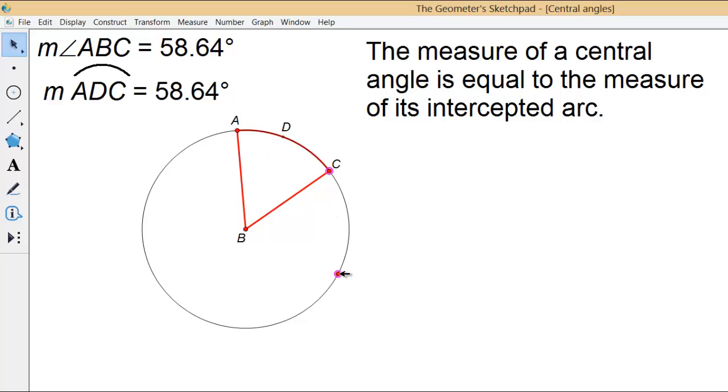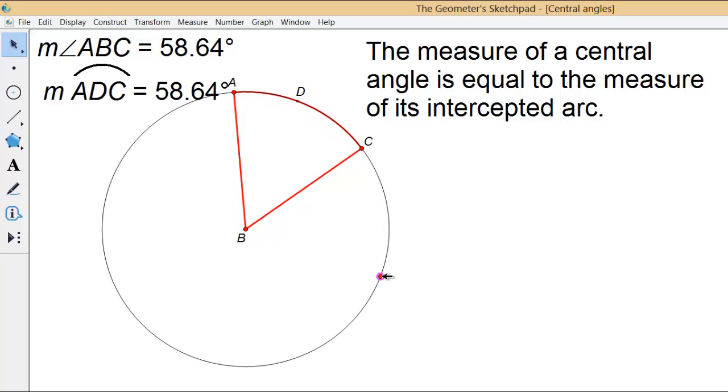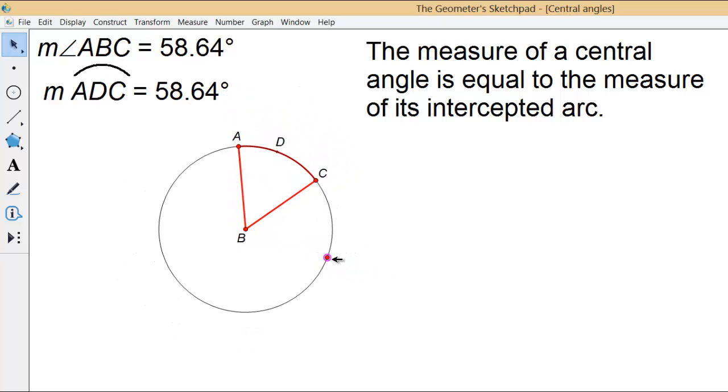I can also make the circle bigger, and smaller, and it doesn't matter. It's still true that the measure of the central angle is equal to the measure of its intercepted arc.